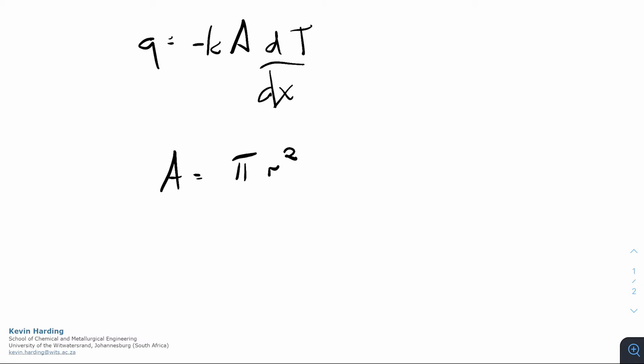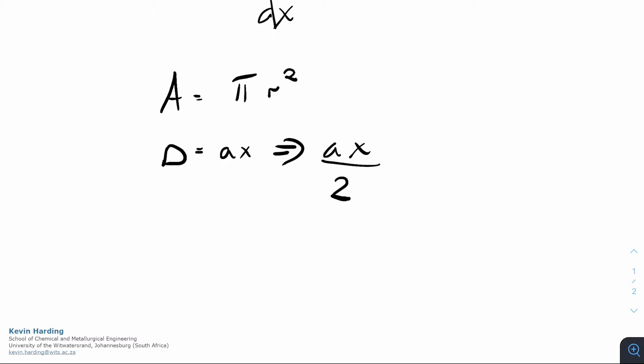But we know that the diameter is equal to a multiplied by x, so that is the diameter. We can convert that to a radius which would be ax on two. That is the radius that we would then substitute into the area to work out the actual area as a function of x. So it will be pi, and don't forget this r is squared, so it'll be ax on two all squared, or pi a squared x squared on four.